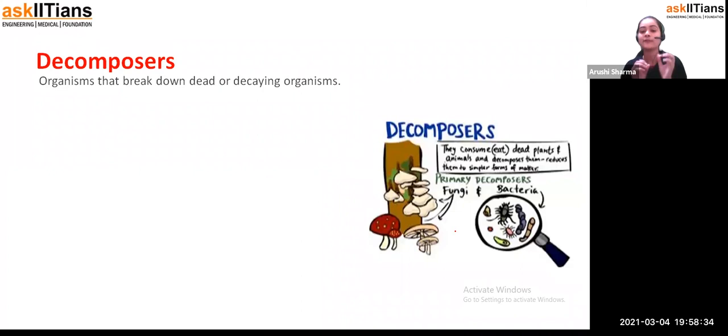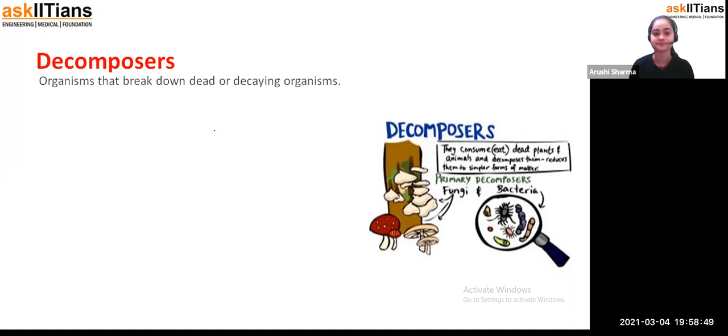Now coming to another type of organism: decomposers. Decomposers are very small in size — even if you see with your naked eye, you are not able to observe them exactly because they are very small. What are decomposers? These are the organisms that break down the dead or decaying organisms. They consume dead plants and animals and decompose them, reducing them to the simpler form of matter.